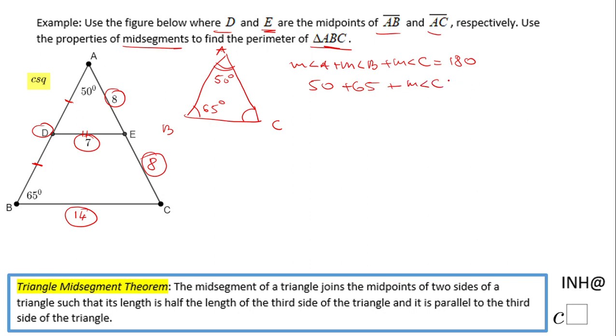50 plus 65 is 115, plus the measure of angle C equals 180. So we subtract 115 from both sides, and we get the measure of angle C equals 65.